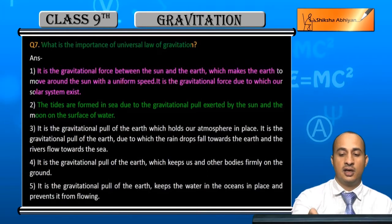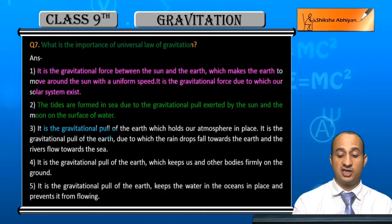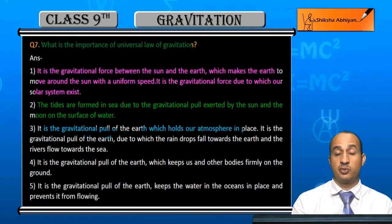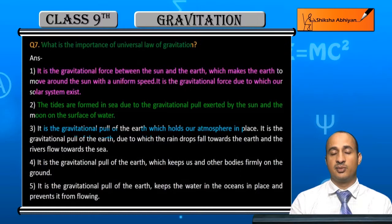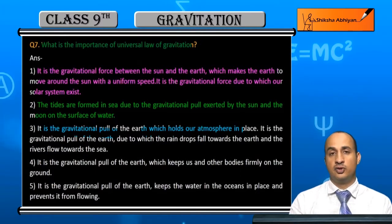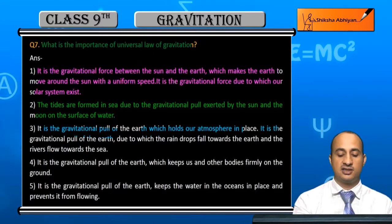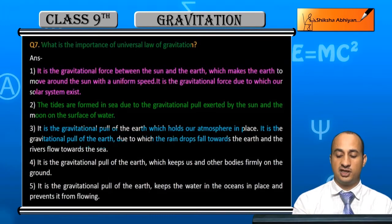This is the important thing. If we talk about it, it is the gravitational force of Earth which holds the atmosphere. The atmosphere could not be held without gravitational pull. Otherwise, it is the gravitational pull of Earth due to which rain drops fall.